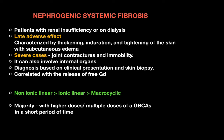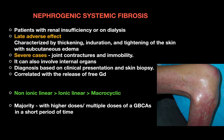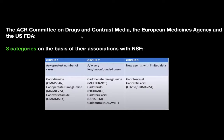The ACR Committee on Drugs and Contrast Media, the European Medicines Agency, and the US FDA have given three categories based on association with NSF: Group 1 (associated with the greatest number of cases), Group 2 (very few cases), and Group 3 (newer agents with limited data). In pregnancy, Group 2 agents can be used at the least possible dose with well-documented risk-benefit analysis.